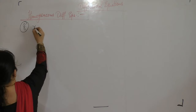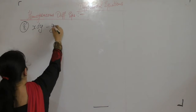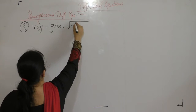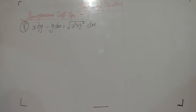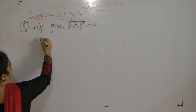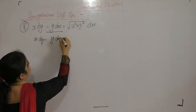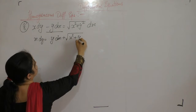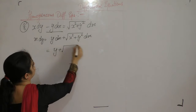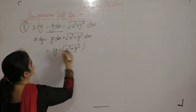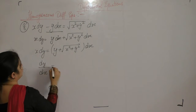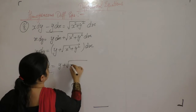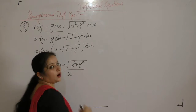Solve: x dy minus y dx equals square root of x squared plus y squared dx. Rearranging, y plus square root of x squared plus y squared dx equals x dy. So dy upon dx equals y plus square root of x squared plus y squared, all upon x.